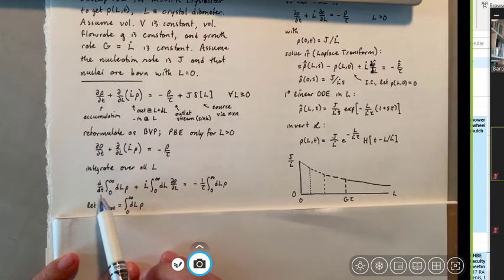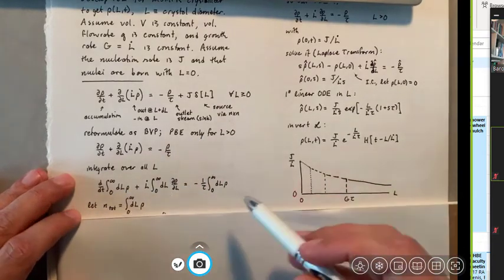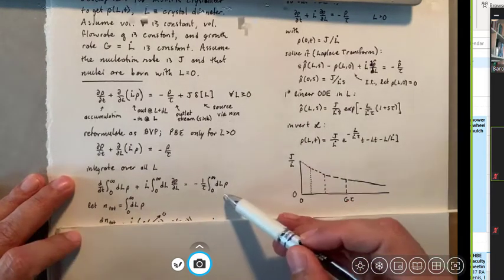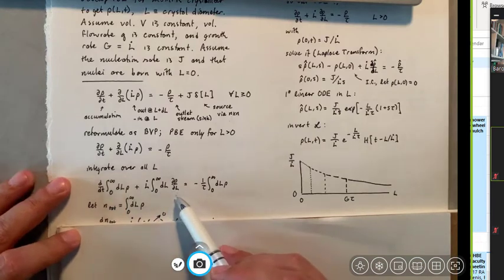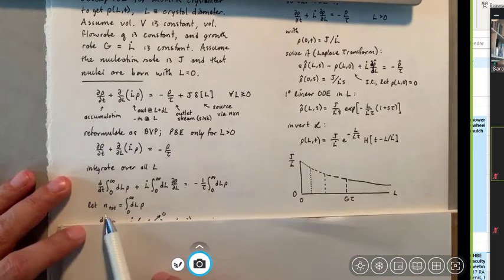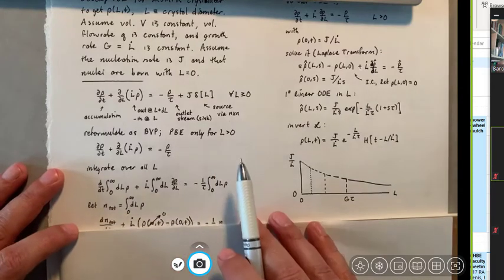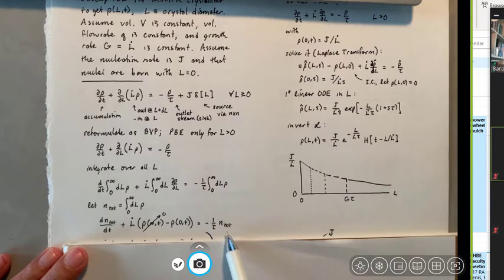And this is now going to allow us to incorporate the total number of nuclei. So the total number of nuclei that we have present in the entire reactor appears here. It appears here. And this thing is closely related to it. So let's give it a name. Let's call the total number of nuclei in the whole reactor is the integration of my population density with respect to L from zero to infinity. So what we have now is that the first term is just the time derivative of that total number of nuclei. The last term is minus one over tau times the total number of nuclei.